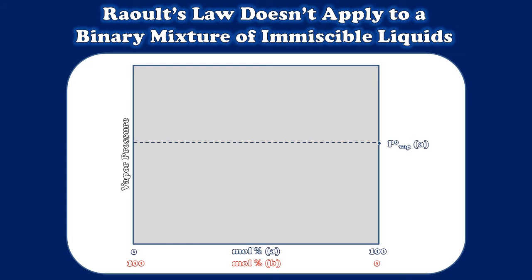This means those sloped lines that corresponded to Raoult's law in our previous diagram are no longer sloping. Now they're straight. It doesn't matter how much A and B I have in the mixture. The vapor pressure of A will always be the same and the vapor pressure of B similarly will be unchanging as the composition of the mixture changes.